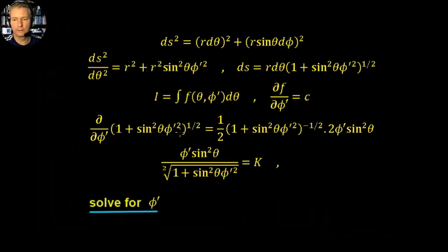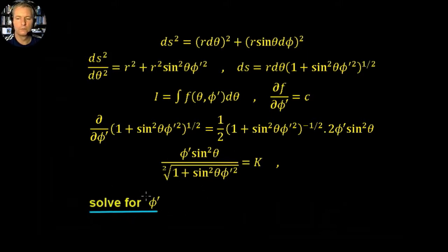The simplified Euler-Lagrange gives us: ∂f/∂φ' = constant c. So what we have to do is differentiate the whole expression with respect to phi prime. We get a factor of one half, then (1 + sin²θ φ'²) to the power of minus one half, and differentiating inside we get 2φ' sin²θ. The 2s cancel, and we're left with φ' sin²θ divided by √(1 + sin²θ φ'²) equals a constant. Now we want to solve for phi prime.